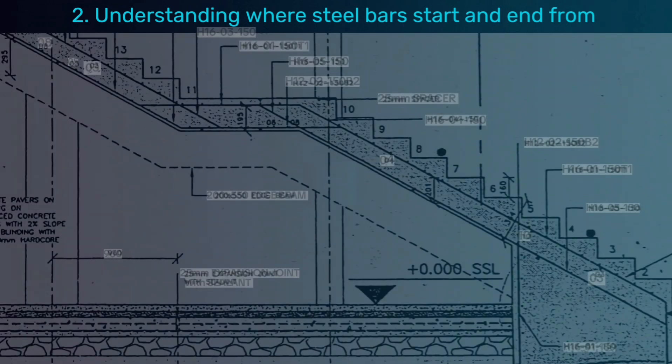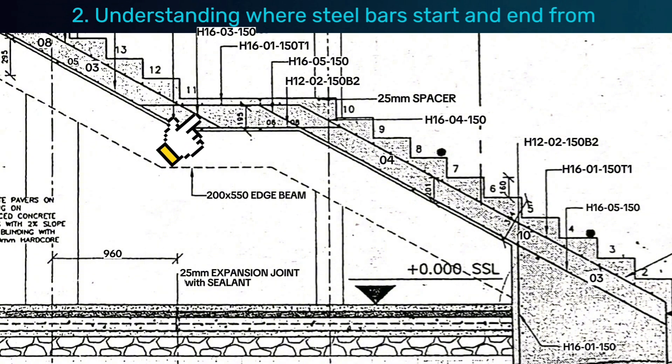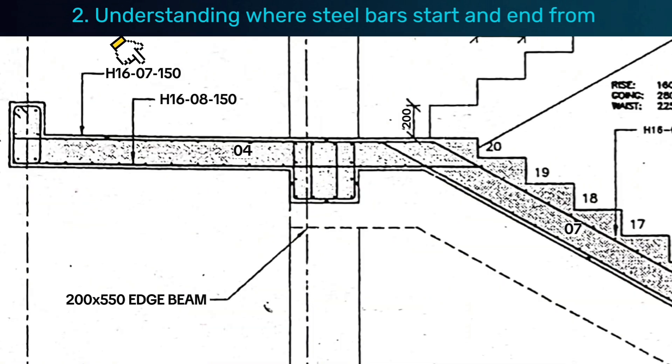Step 2 is understanding where steel bars start and end from. For example, this steel bar with code 3 starts from here and goes up to this extreme end. This bar with code 7 starts from here up to this beam. To get the shape of the steel bar, you simply have to follow a number and know where it starts from and where it ends.